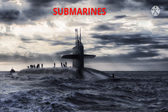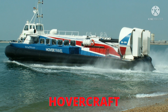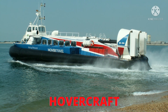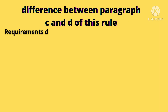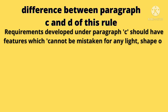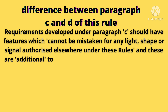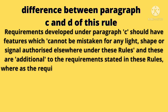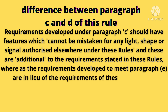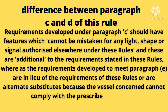Other examples include submarines. Hovercrafts operating on an air cushion are required to be fitted with an additional all-round flashing yellow light as per Rule 23 due to their high operating speeds. Requirements developed under Paragraph C should have features which cannot be mistaken for any light, shape, or signal authorized elsewhere under these rules, and these are additional to the requirements stated in these rules. Whereas the requirements developed to meet Paragraph E are in lieu of the requirements of these rules, or are alternate substitutes, because the vessel concerned cannot comply with the prescribed standard.